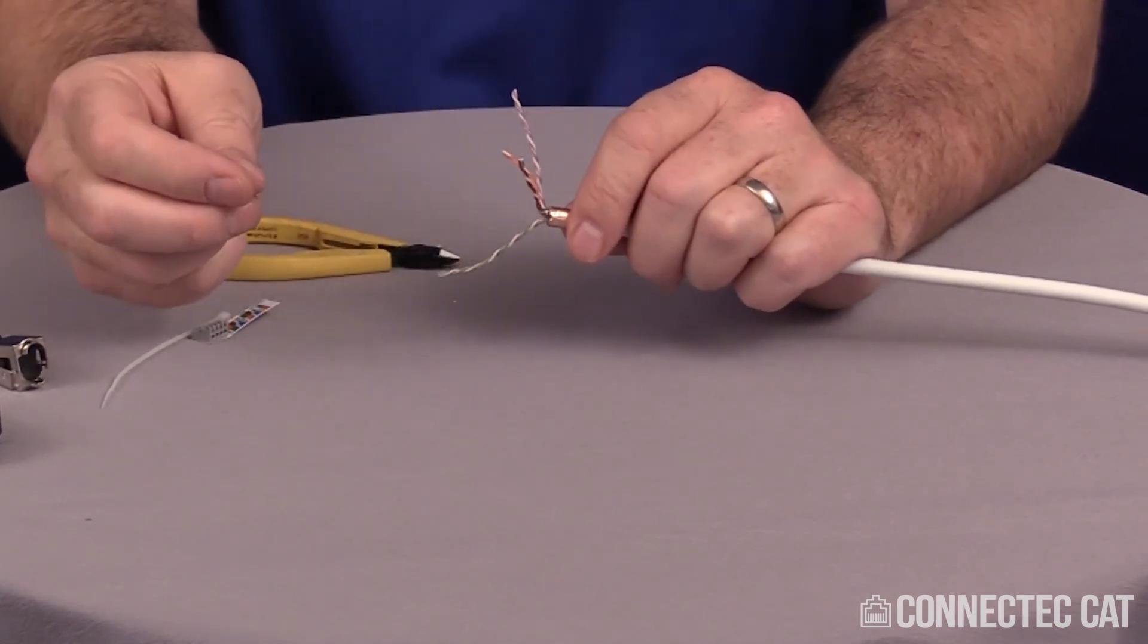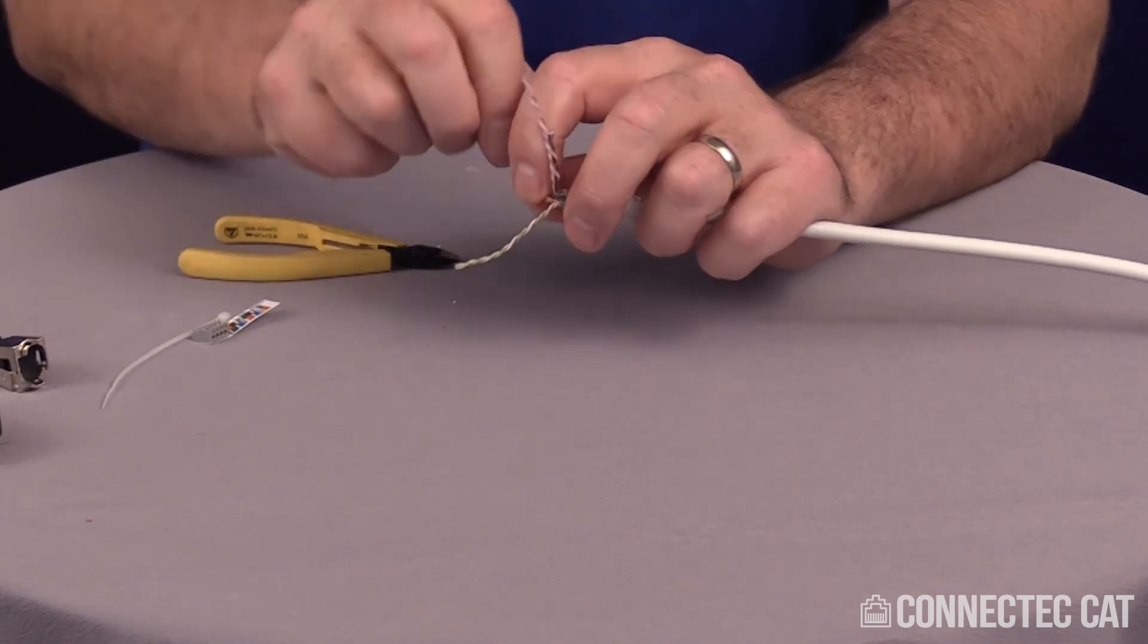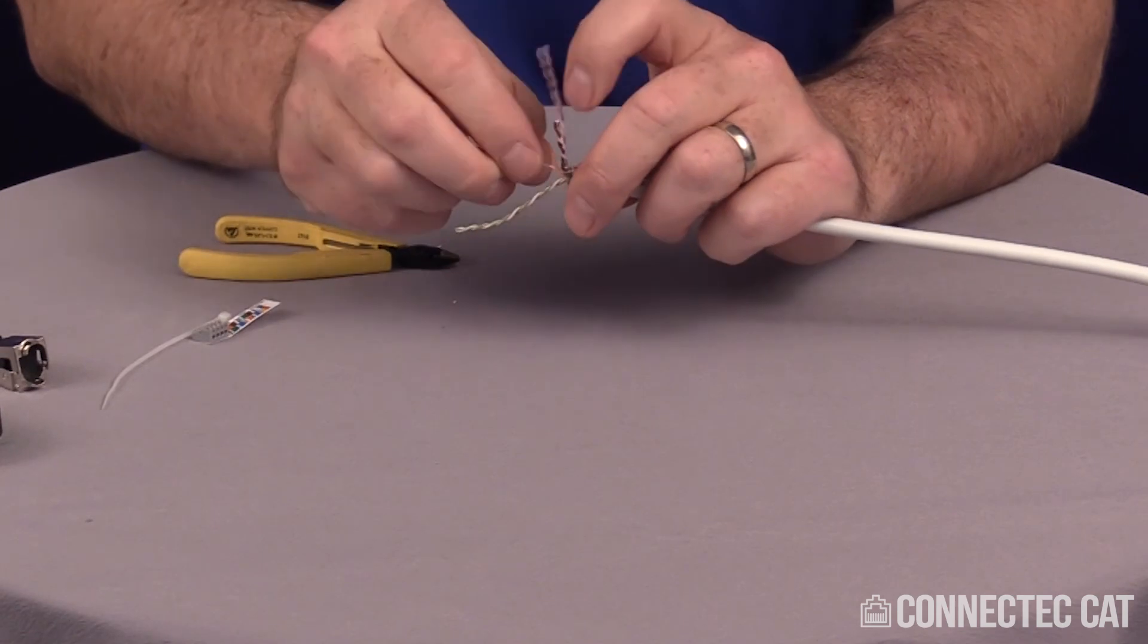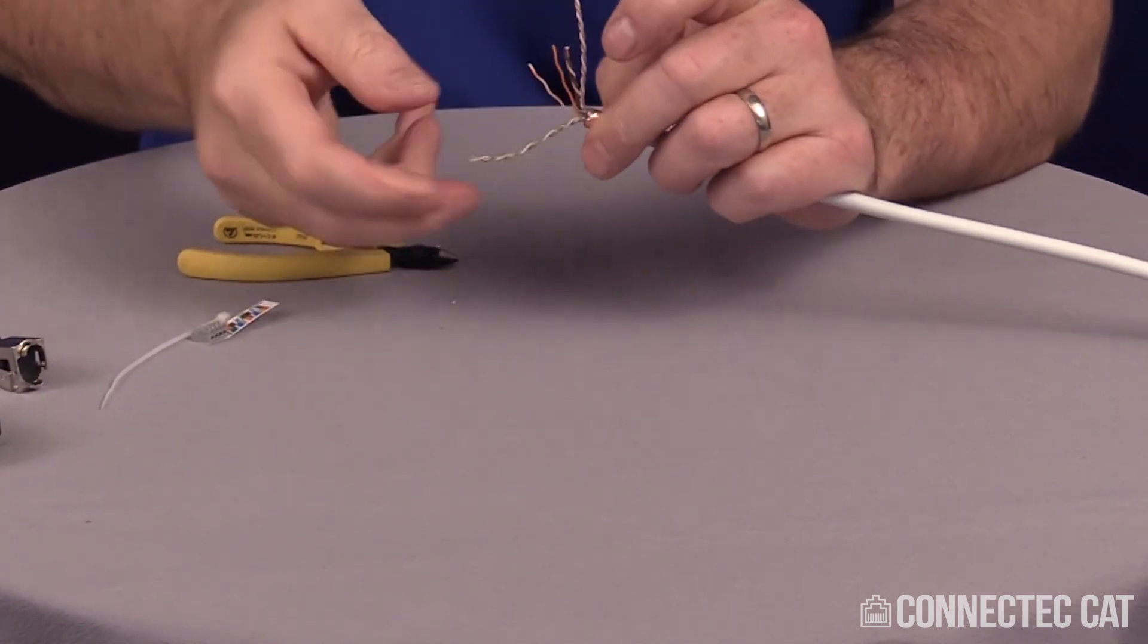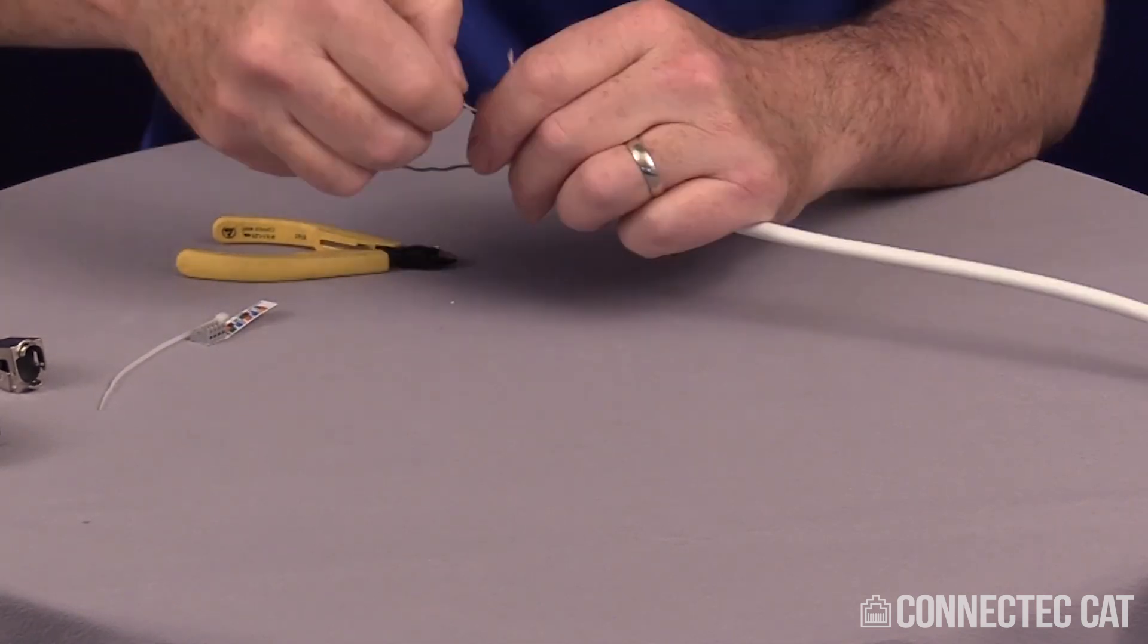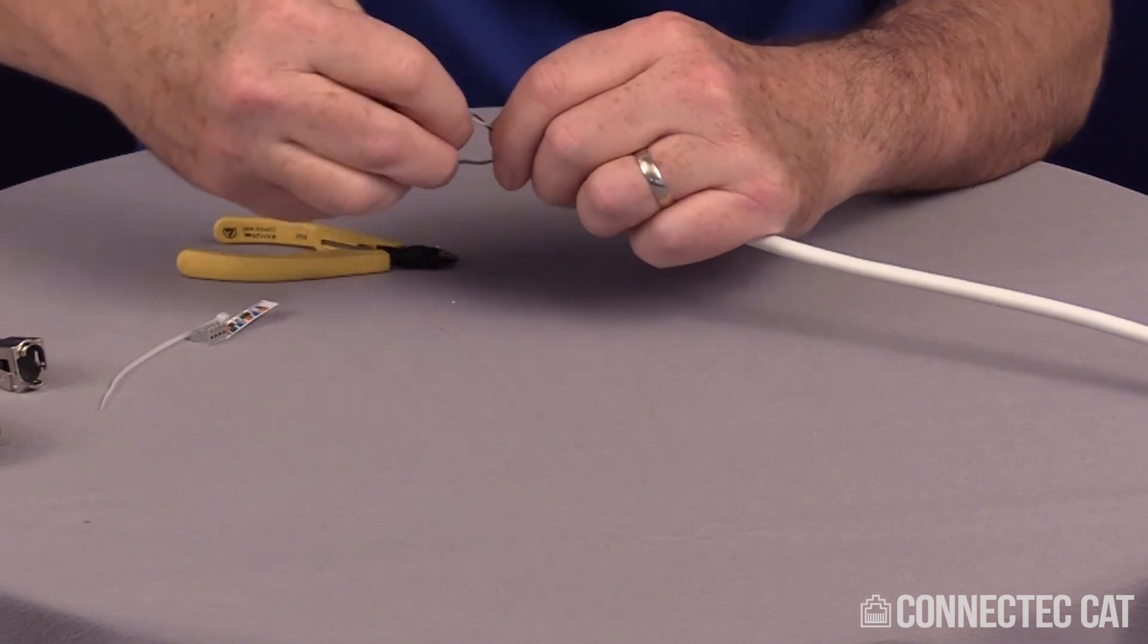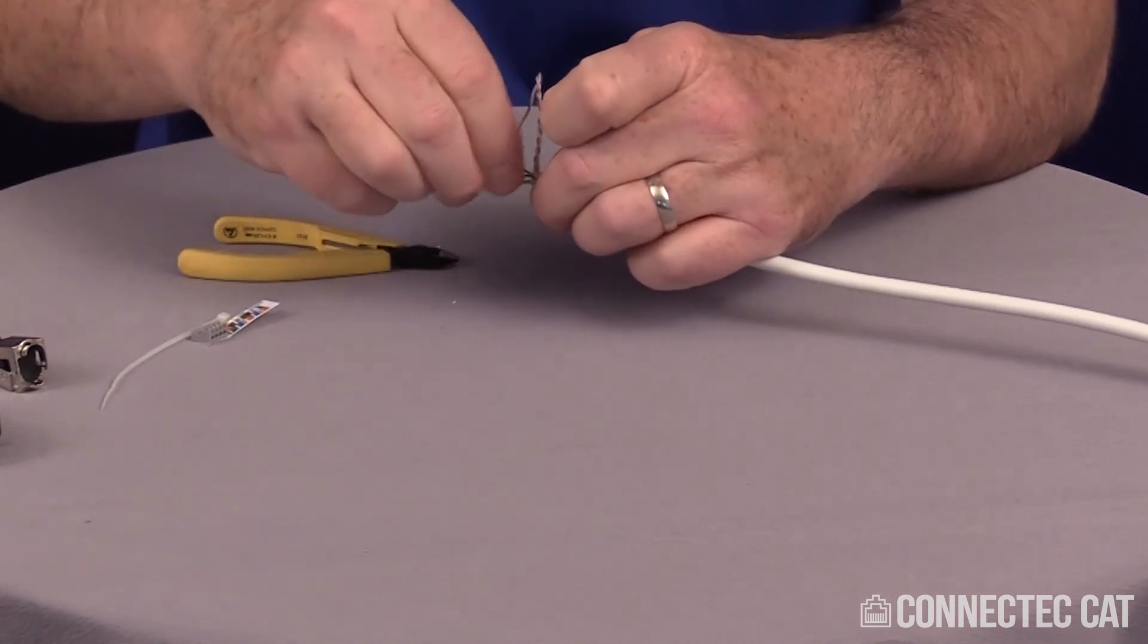Next step is going to be to untwist your pairs. This is probably the longest step of the whole process. You can do it many different ways. I'm going to use my fingers since we're doing a demonstration here but you can use the slug of the cable jacket to do it. There's actually tools out there that will help you to separate the pairs also. I'm actually giving a few tugs on each of the conductors after I untwist them in order to smooth out the convolutions from the twisting.